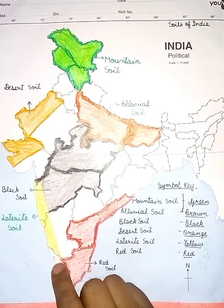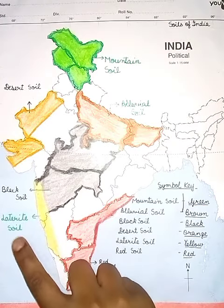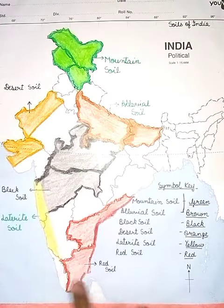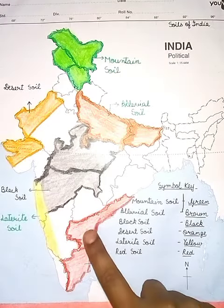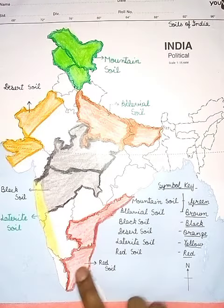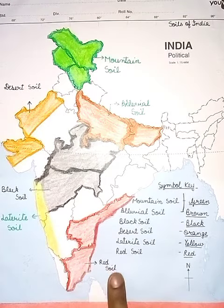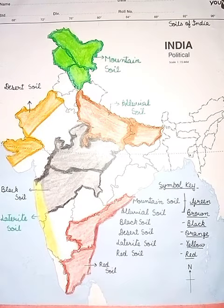In Madhya Pradesh and Maharashtra — black soil. In Maharashtra and Karnataka — laterite soil. In Andhra Pradesh and Tamil Nadu — red soil.